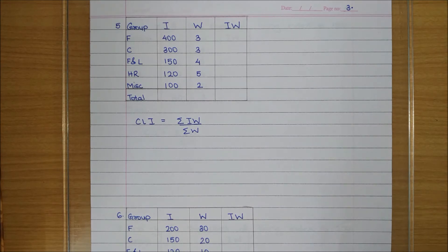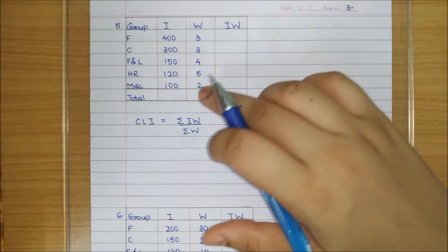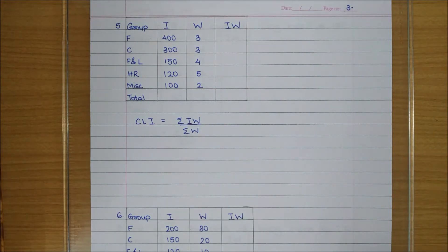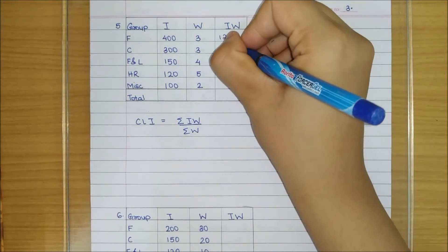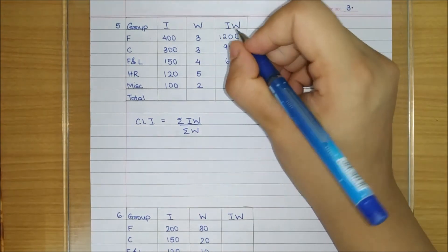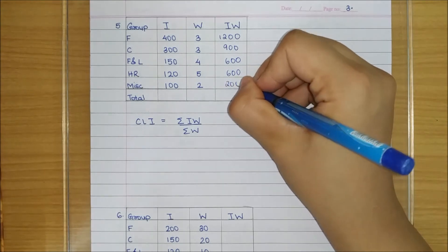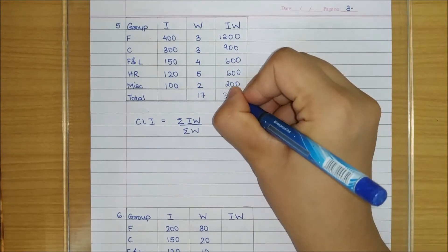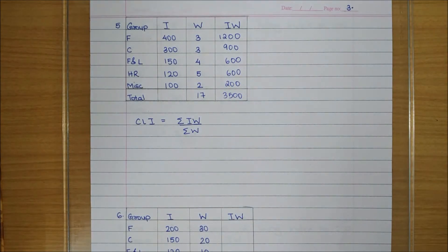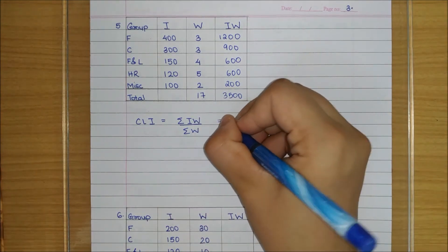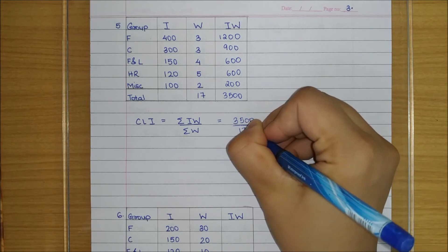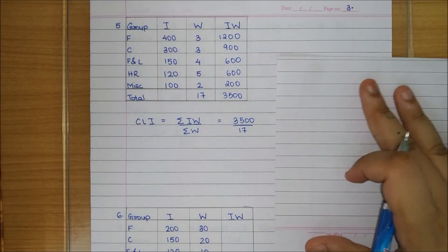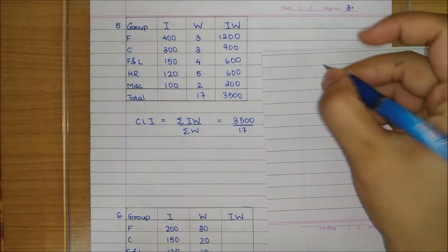The fifth question is exactly the same as the fourth. We have to calculate I·W, find the summation of W, then substitute in the formula. First let us find the I·W column. Now substituting, we get 3500 divided by 17.